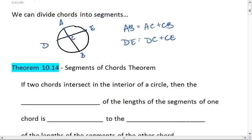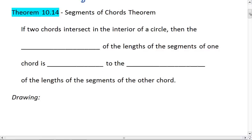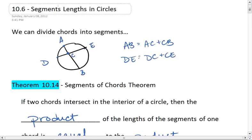This leads to theorem 10.14, Segments of Chords Theorem. If two chords intersect in the interior of a circle, then the product of the length of the segments of one chord is equal to the product of the length of the segments of the other chord.